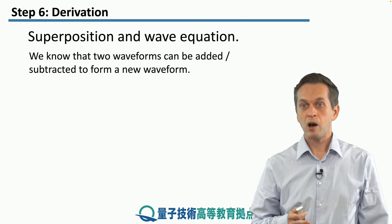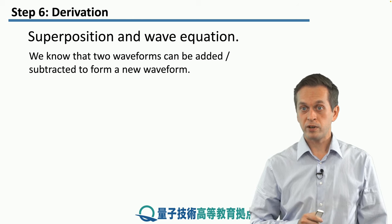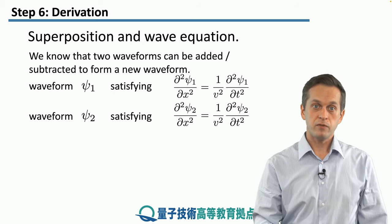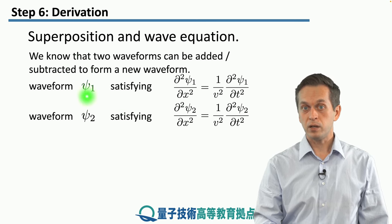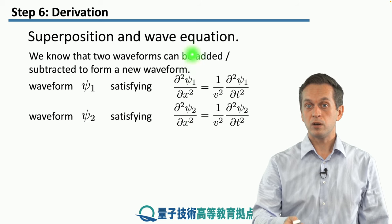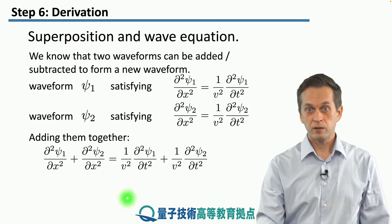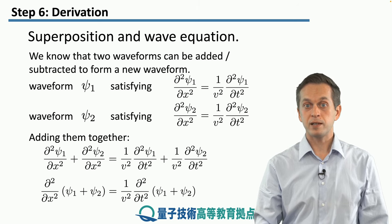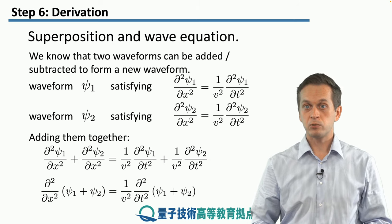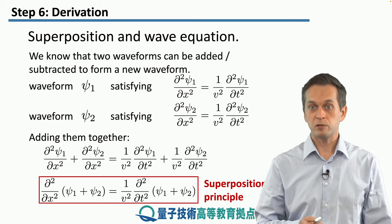Next, we look at how the superposition principle comes out of the wave equation. The wave equation in one dimension is linear. If psi1 and psi2 are both solutions to the wave equation, we can simply add the two expressions — adding left-hand sides and right-hand sides — to obtain a new wave equation whose solution is psi1 plus psi2. In other words, we can add two separate solutions to form a new solution satisfying the same wave equation, which is another way of saying the superposition principle holds.